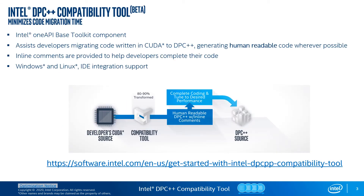Intel DPC++ Compatibility Tool is a part of Intel OneAPI Base Toolkit — a core set of tools and libraries for building and deploying high-performance data-centric applications across diverse architectures. The tool assists in the migration of a developer's program written in CUDA to a program written in Data Parallel C++ (DPC++), which is based on modern C++ and incorporates portable industry standards such as SYCL.